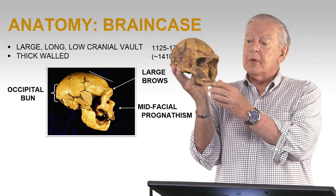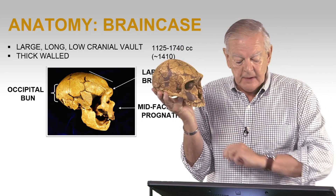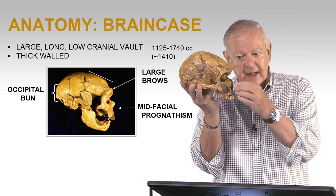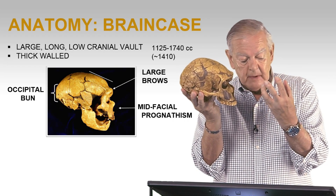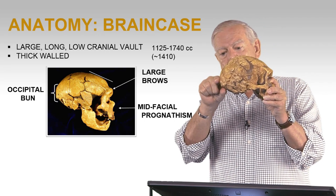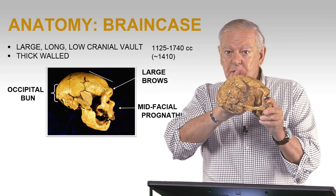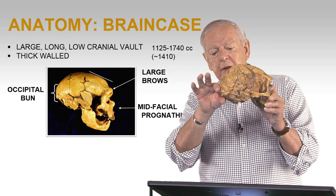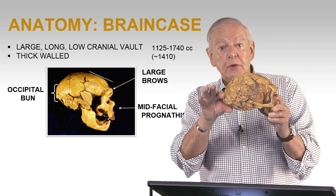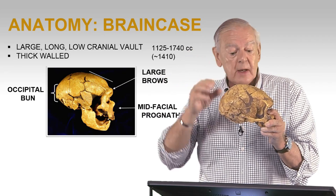The first thing that you notice are the brow ridges, of course, here above the eye orbits. There is a lot of face projecting out, which is called prognathism. And on the back there is this area called the occipital — remember these are the parietals we talked about when we talked about erectus. There's a little bun back here, or the French call it a chignon, which is as a woman makes when she ties her hair in a bun on the back.